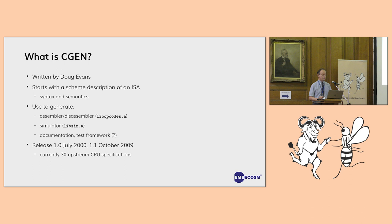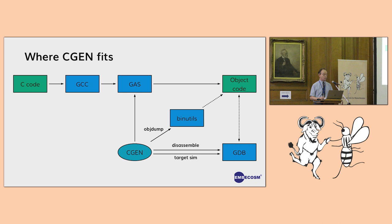CGEN is quite old. The first release was July 2000, the second release was October 2009, and it's regarded as a pretty stable piece of software. Currently there are about 30 different CPU descriptions upstream. Where it fits in: you put C or C++ code into GCC, get assembler, put that into the GNU assembler, and it spits out object code. CGEN can help you generate GAS, a disassembler for objdump's -d option, and a simulator - in all cases as table-driven solutions.